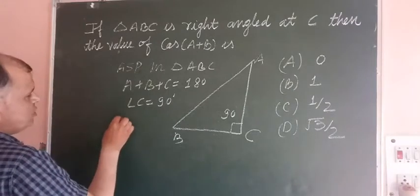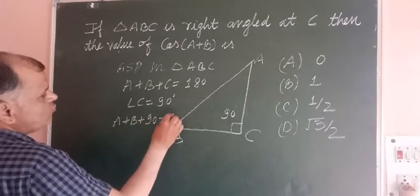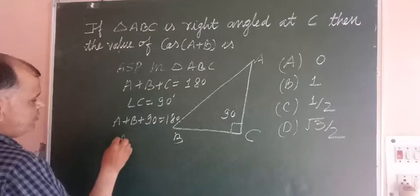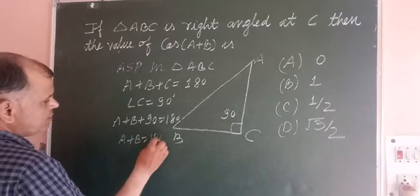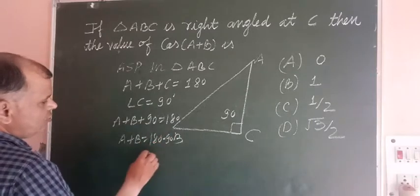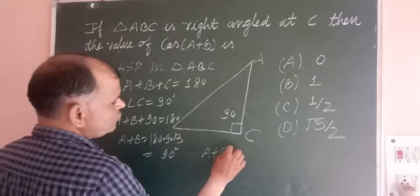So we put the value of C, so A plus B plus C which is 90 equals 180. Now A plus B we got here 180 minus 90, or this is 90. So A plus B equals 90.